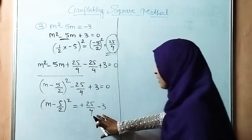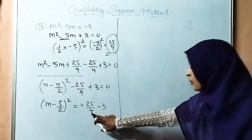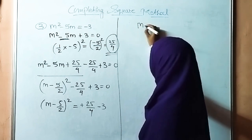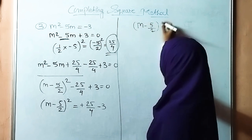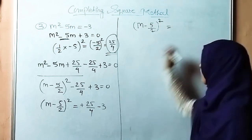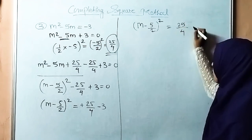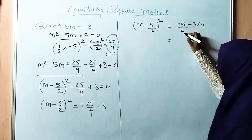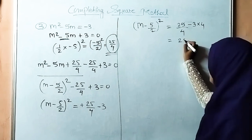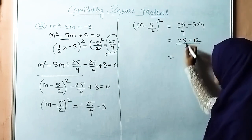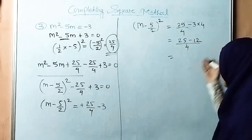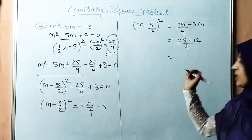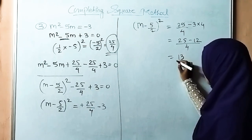We solve the right side: 25/4 minus 3. Multiplying 3 by 4 gives 12. So we have m minus 5/2 bracket square equals 25 minus 12 upon 4. Since 25 minus 12 equals 13, we get m minus 5/2 bracket square equals 13/4.